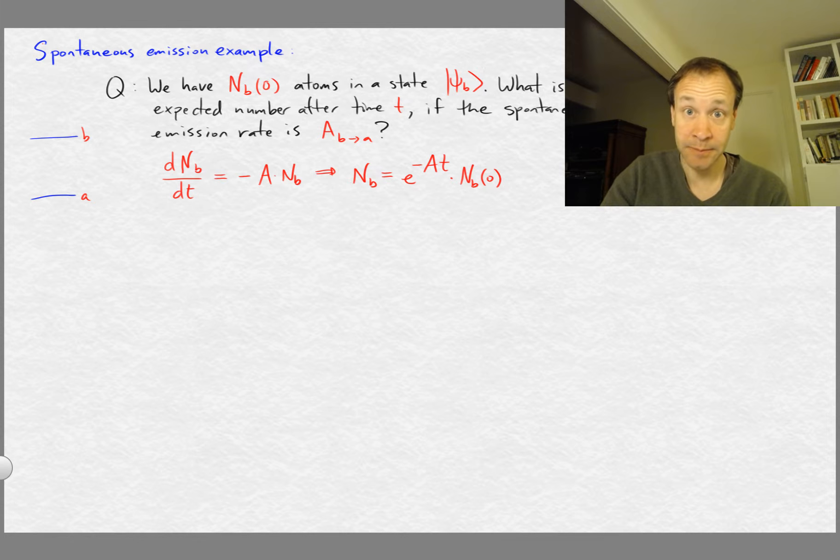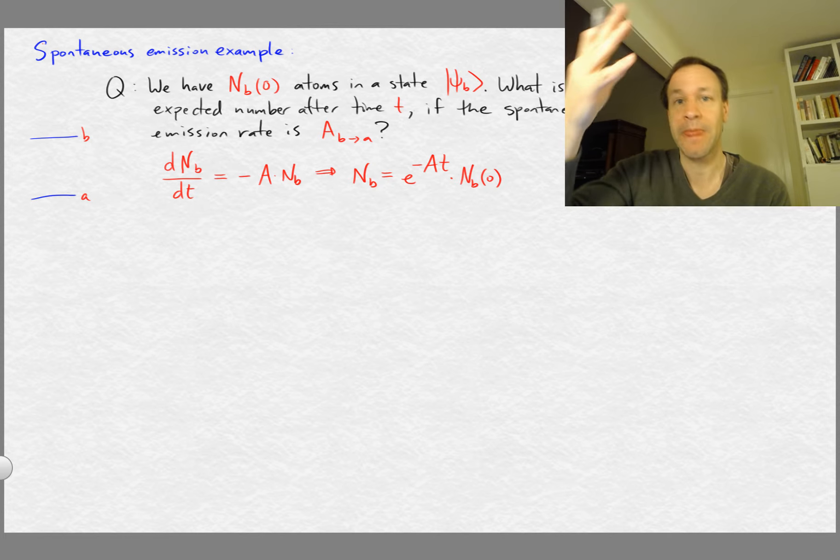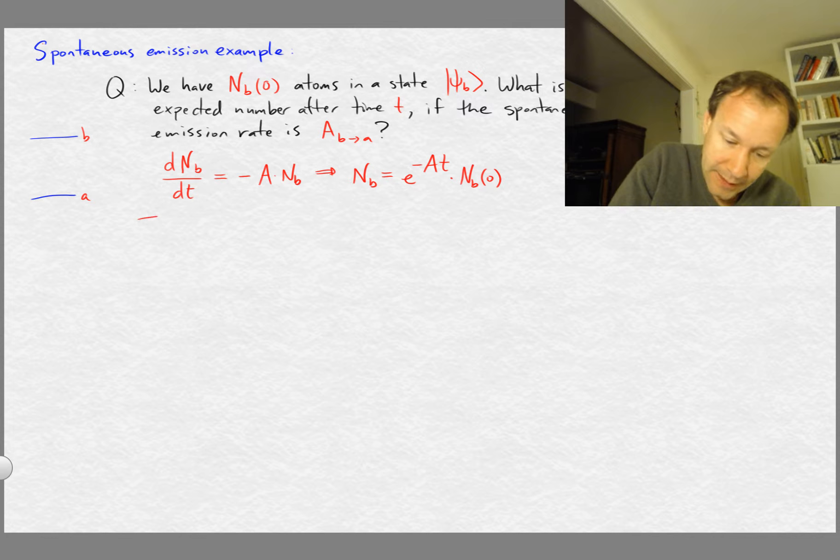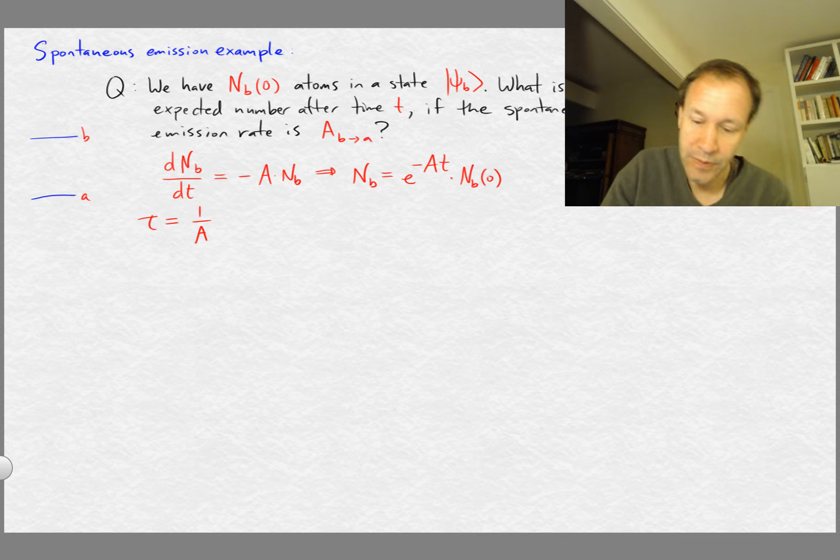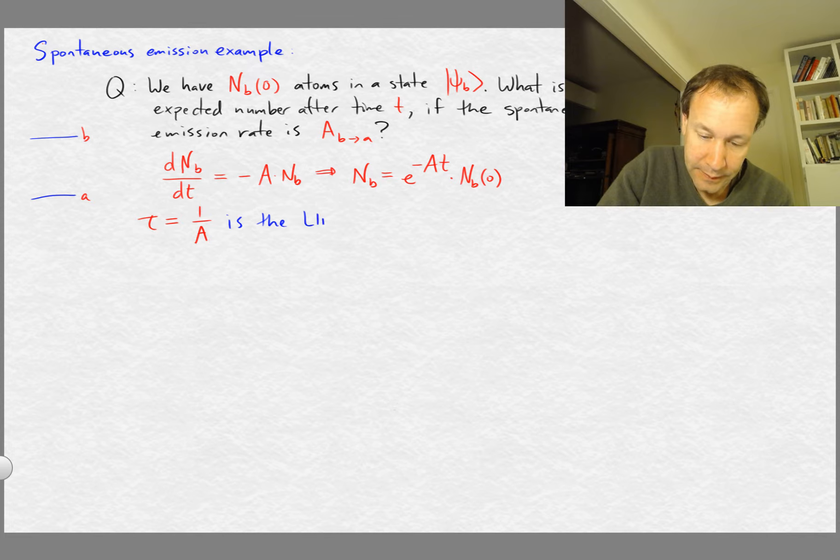And it's common to associate what's called a lifetime to that exponential decay. And so we define tau as 1 over A. So that's the time constant in the exponential, and we call that the lifetime of the state.